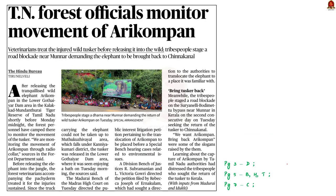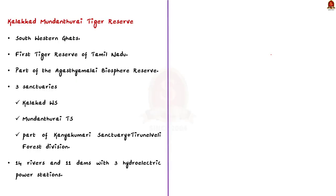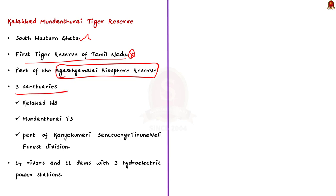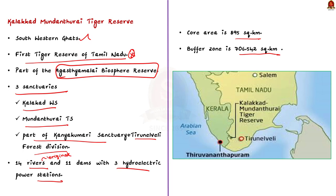This news article talks about a wild elephant named Arikumban that was released in Kalakad Mundanthurai Tiger Reserve in Tamil Nadu. Forest officials are using a radio collar to track the elephant's movements. In Kerala, local tribes are protesting and demanding that Arikumban should be returned to their area. We will use this opportunity to learn about Kalakad Mundanthurai Tiger Reserve. The reserve is situated in the South Western Ghats and was declared as the first Tiger Reserve of Tamil Nadu. It forms a part of the Agasthyamalai Biosphere Reserve. It includes three sanctuaries: the Kalakad Wildlife Sanctuary, Mundanthurai Tiger Sanctuary, and part of Kanyakumari Sanctuary with portions of Tirunelveli Forest Division. As many as 14 rivers originated from this reserve, and there are 11 dams in and around the reserve with three hydroelectric power stations. The core area is 895 sq km and the buffer zone is 706.542 sq km, making a total of 1601.542 sq km.